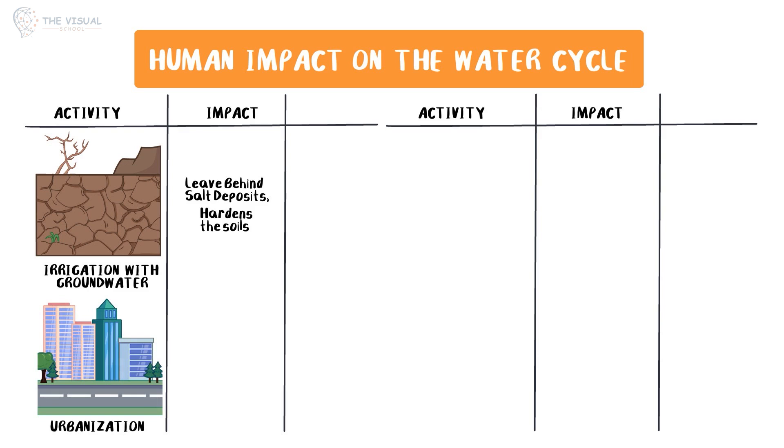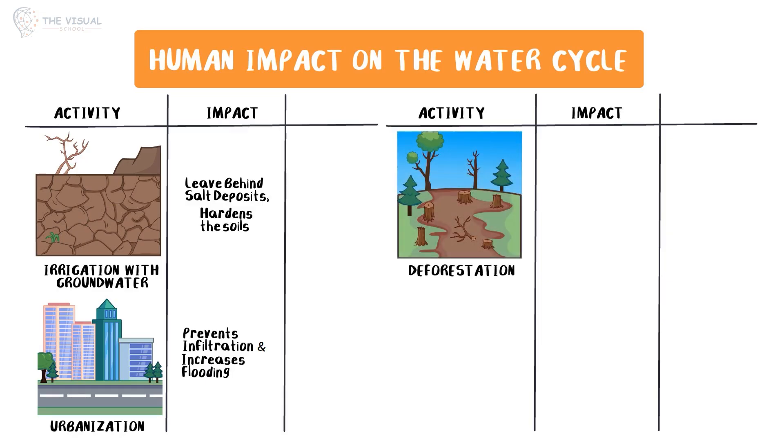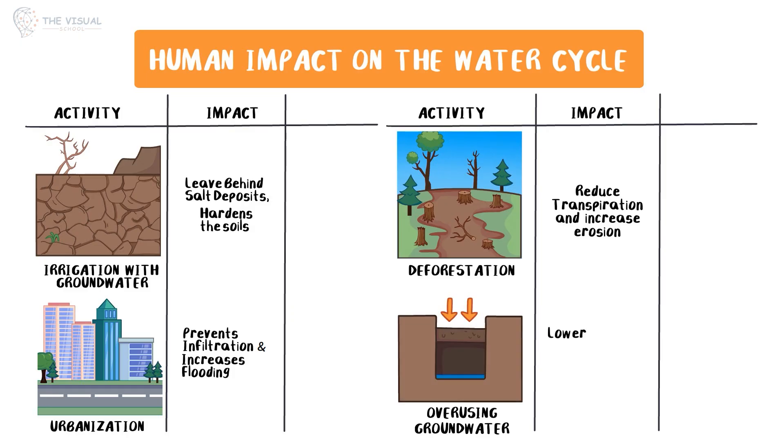Urbanization covers land with pavement, preventing infiltration and increasing flooding. Deforestation removes trees, reducing transpiration and increasing erosion. Overusing groundwater for farming and drinking can lower aquifers, causing land to sink, or allowing saltwater intrusion into coastal areas.